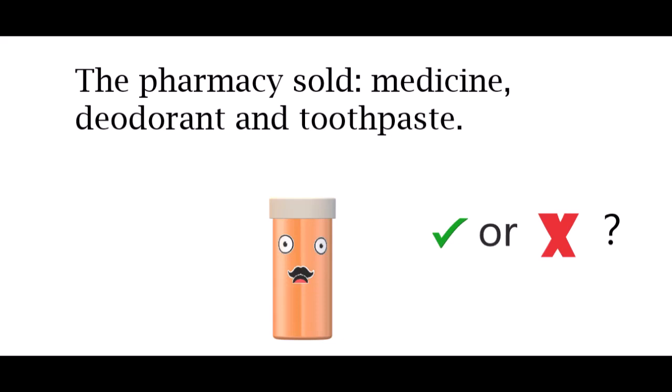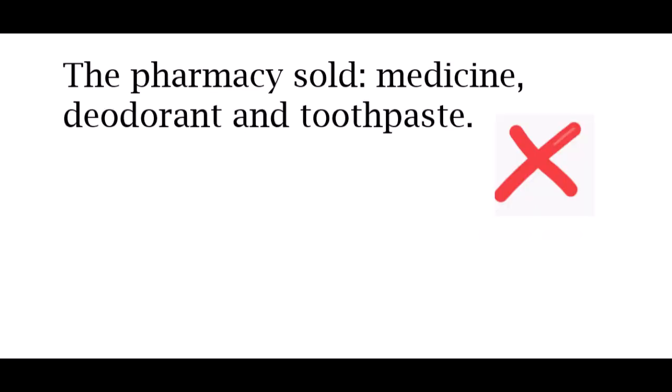The next one says: 'The pharmacy sold: medicine, deodorant and toothpaste.' 'The pharmacy sold' — yes, it has a subject and a verb, but does it complete a whole entire thought? No. It's hanging; it cannot stand on its own, so this sentence is incorrect. We would need to change it. For example, we could say: 'The pharmacy sold three products: medicine, deodorant and toothpaste,' and then it works.